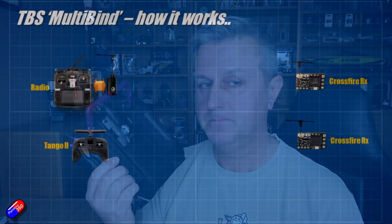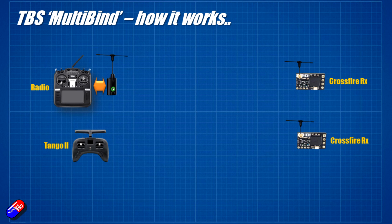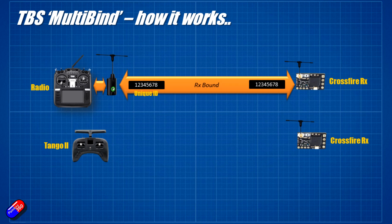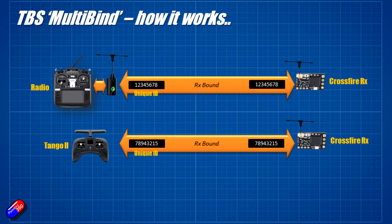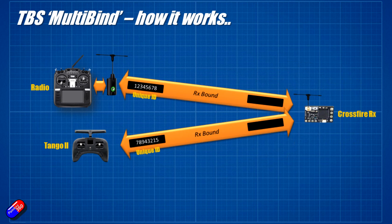Let me jump on a couple of slides and explain that in a bit more detail. Here we have a radio with a module in the back and a Tango 2 below, and we've got a couple of Crossfire receivers. The radio has a unique identifier that gets copied to the receiver when the bind is done, and both ends need to see that same number to connect. If you then bind a Tango 2 to another receiver, the Tango 2 has a different unique ID — meaning you can't cross-talk between receivers bound to different modules.